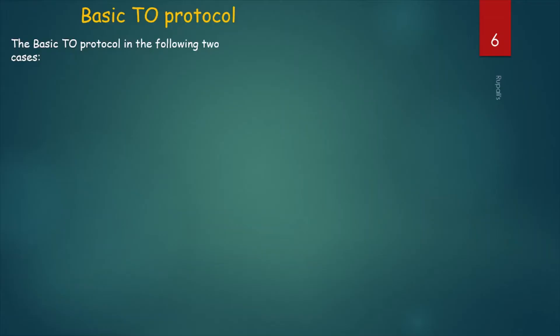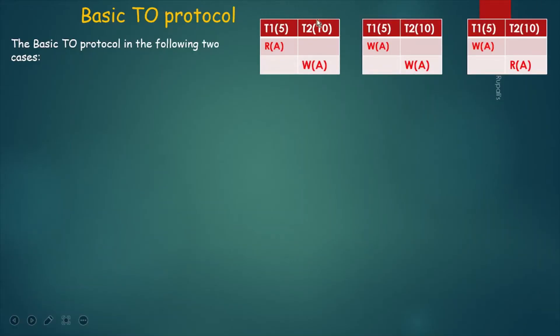Basic Timestamp Ordering Protocol. There are two cases. Say T1 arrives at 5 o'clock and T2 at 10 o'clock. We always assume the first arrived transaction completes first. So if T1 reads data item A and T2 wants to write it, there is no problem. Similarly, if T1 writes data item A and T2 wants to write the same item, there is no problem. And if T1 writes data item A and T2 wants to read it, there is no problem.